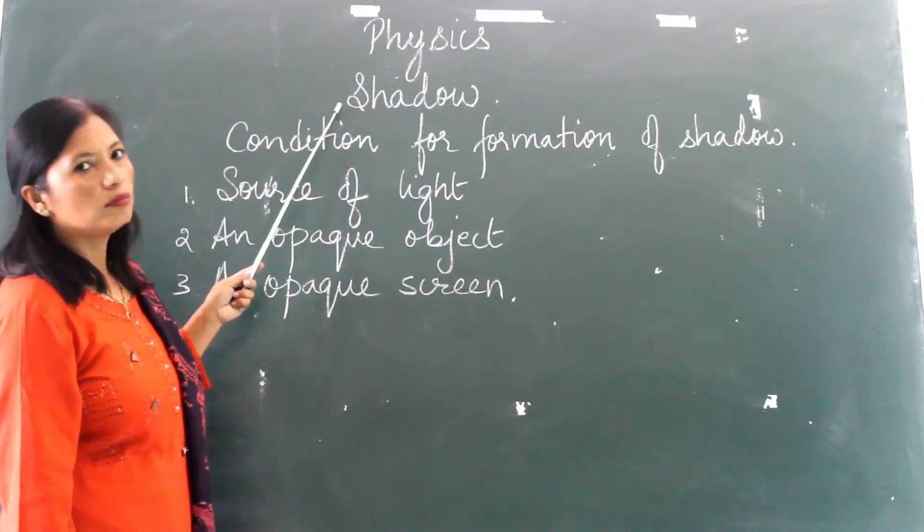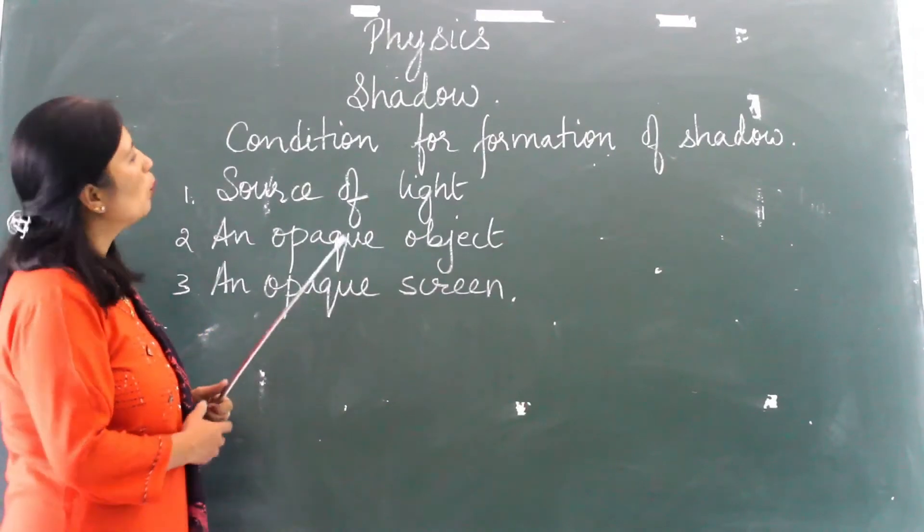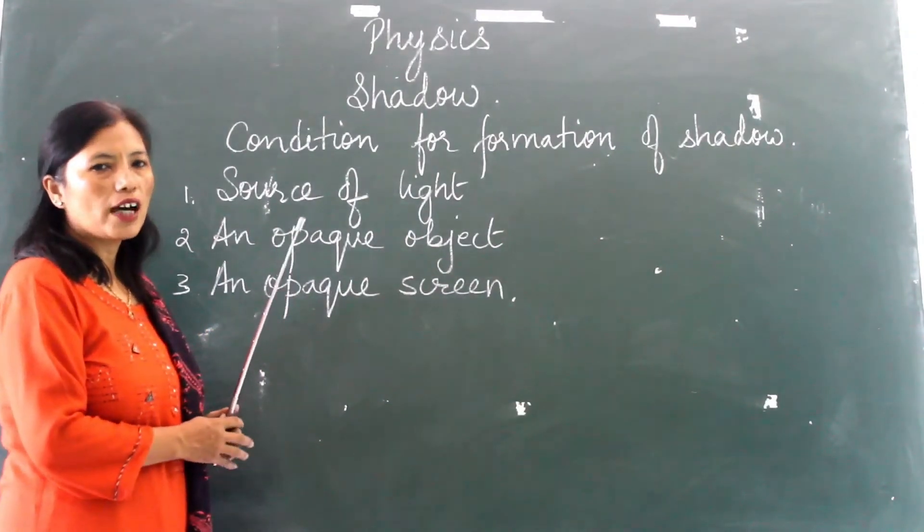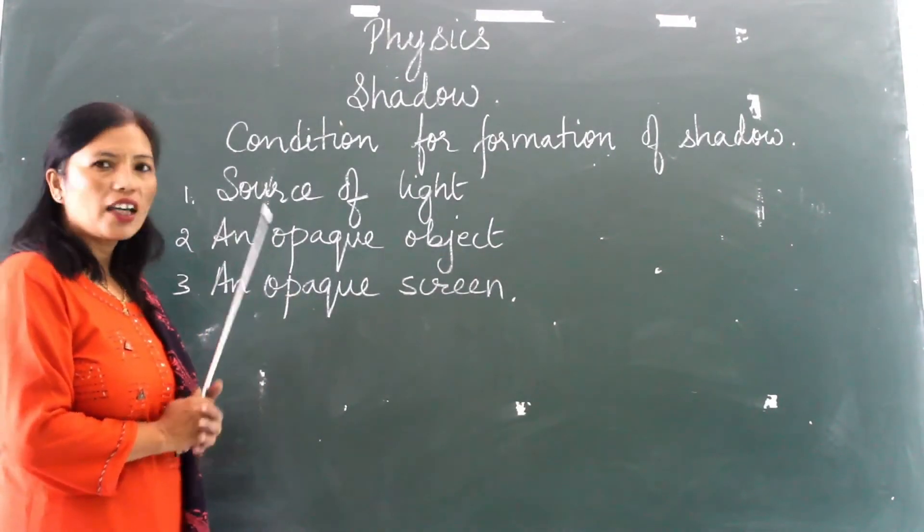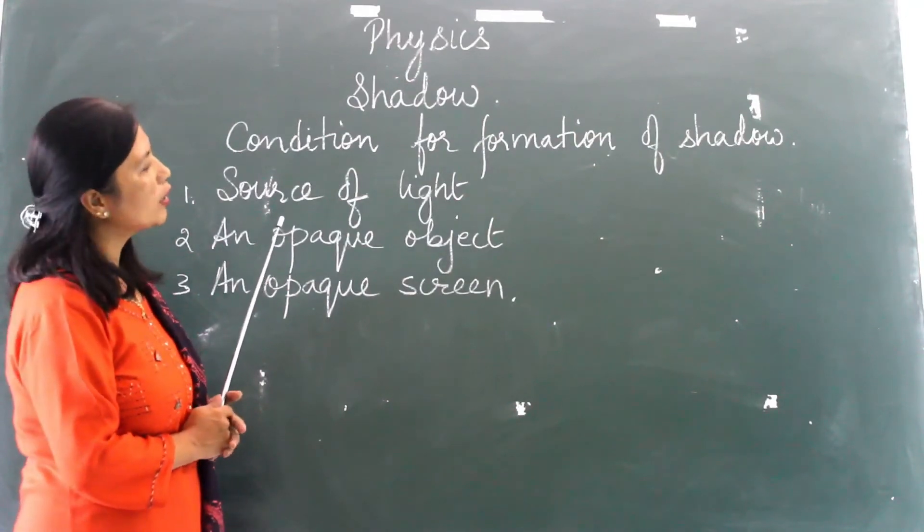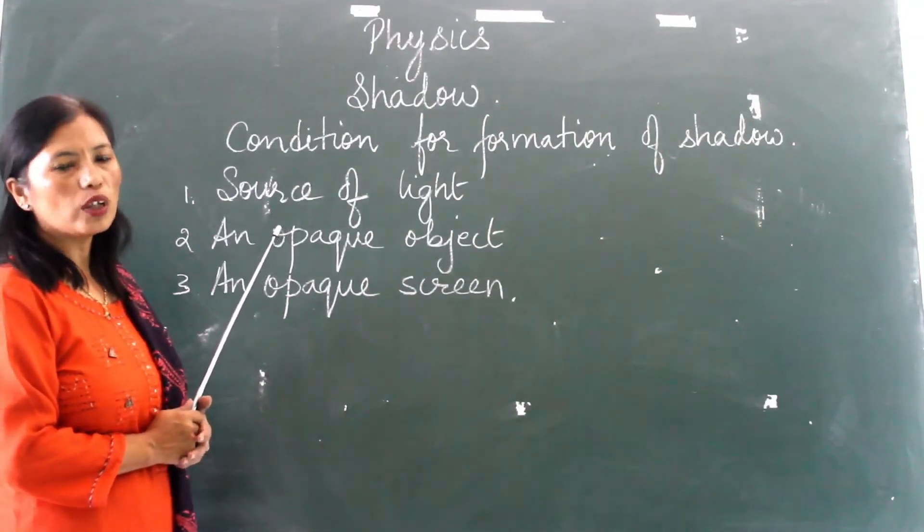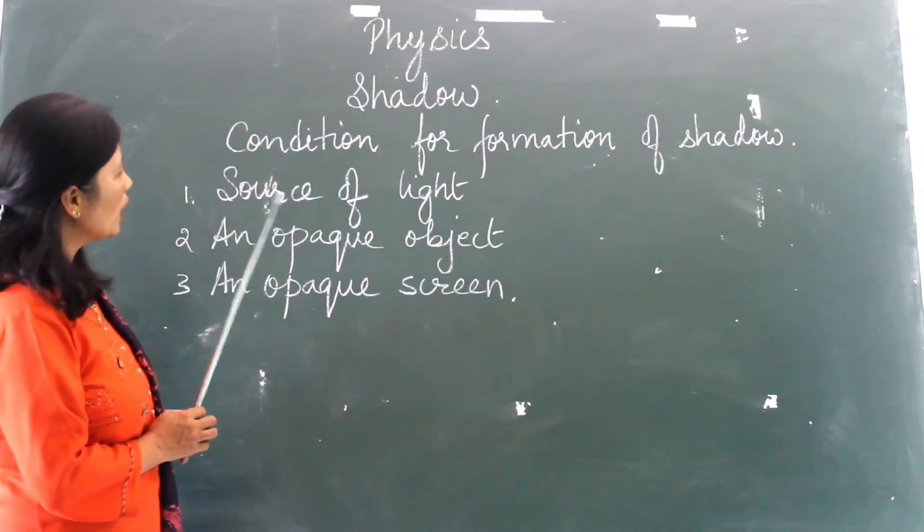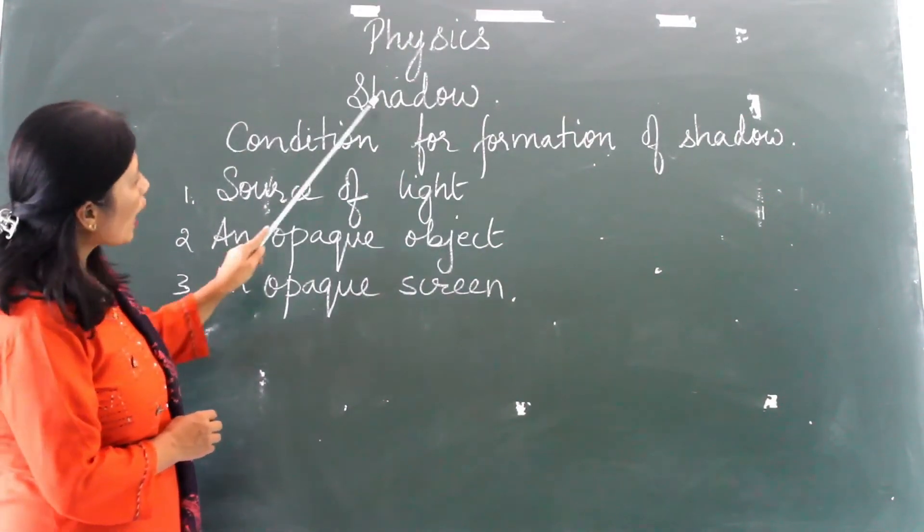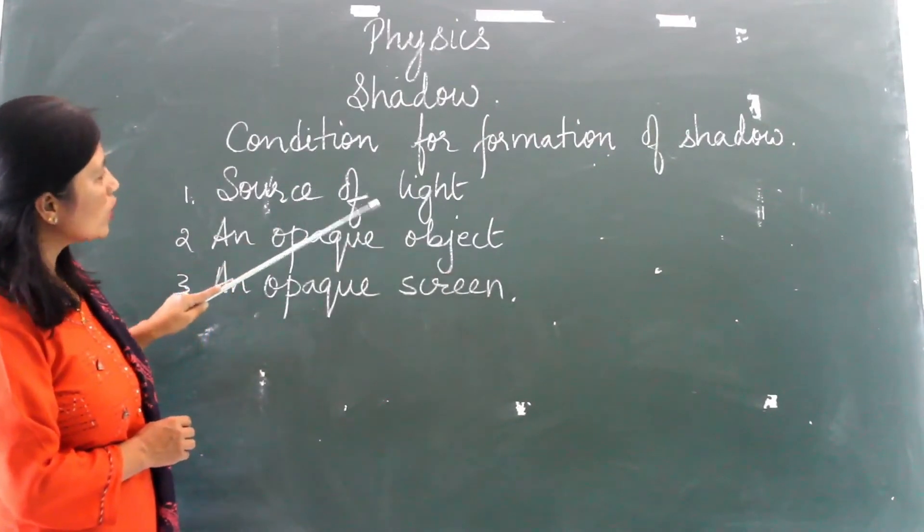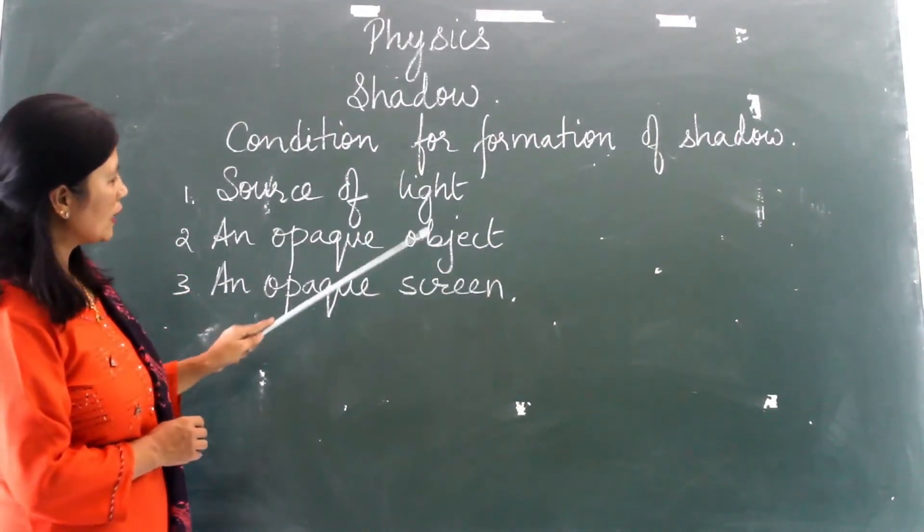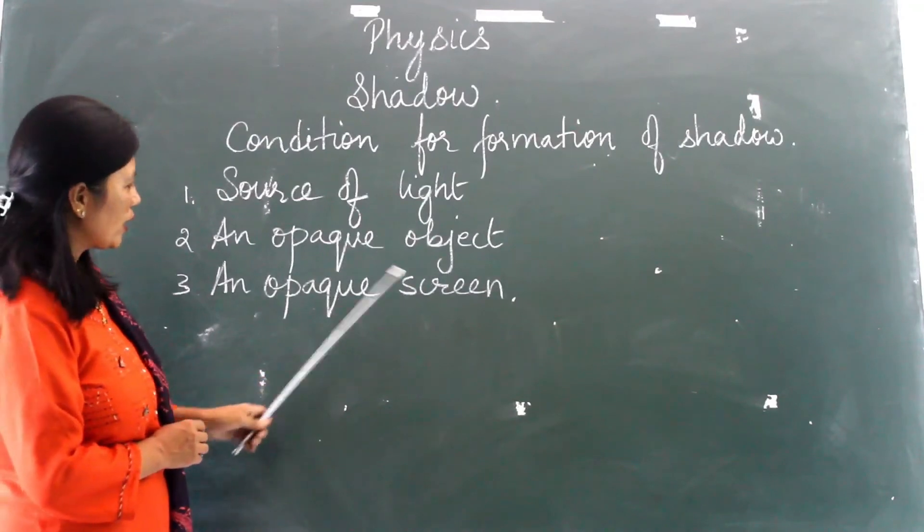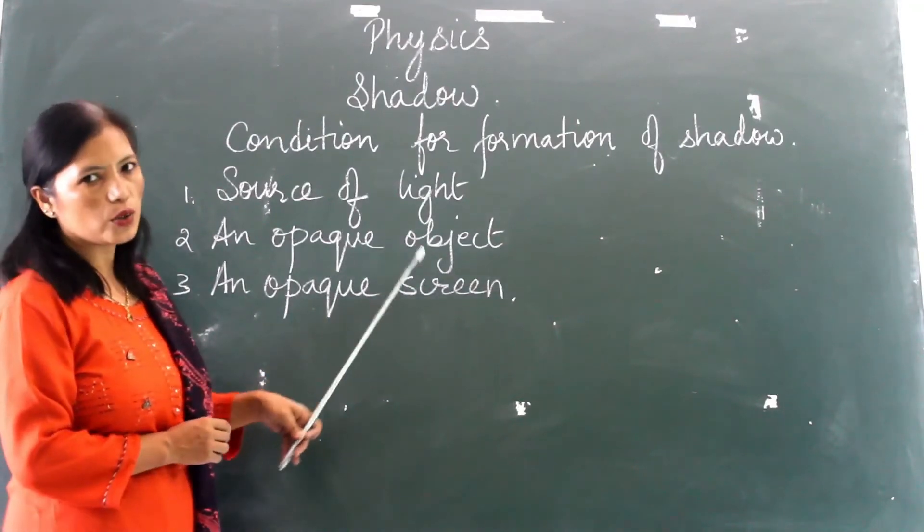Shadow. When an opaque object blocks the path of light, a dark area is formed behind the opaque object which we know as shadow or which we call a shadow. So for a shadow to be formed, we need three conditions: source of light, an opaque object, and an opaque screen.